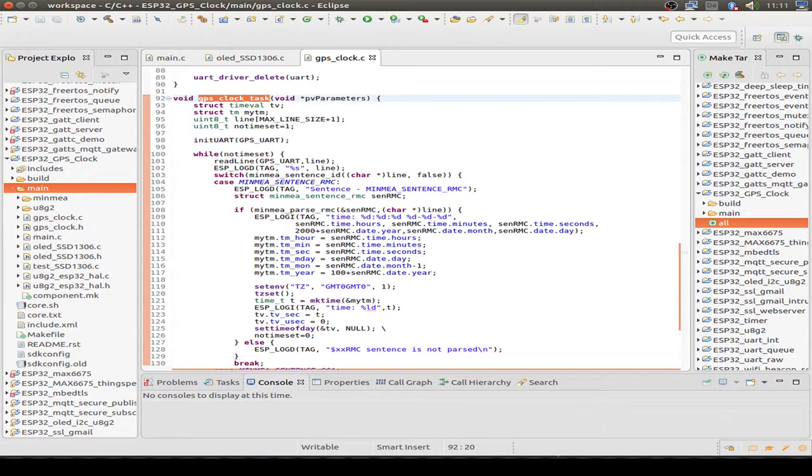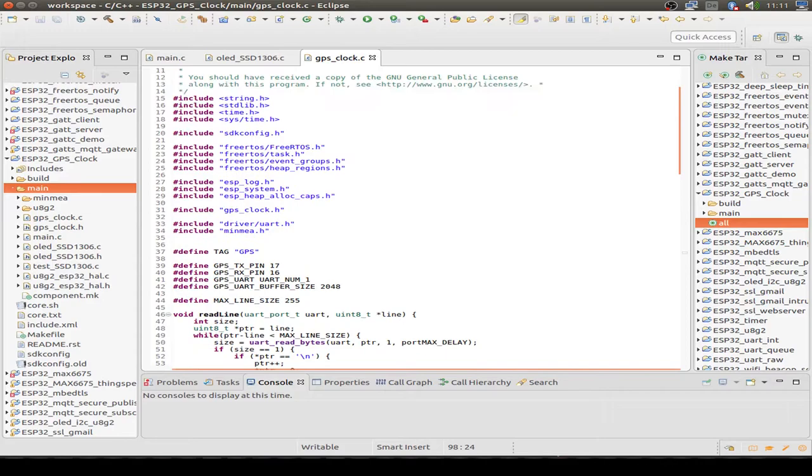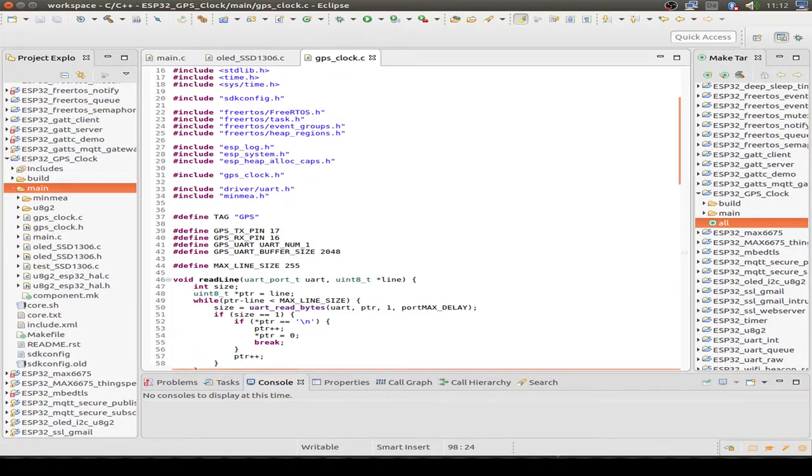The GPS task starts by initializing the second UART driver. As we see, we use UART number one. UART starts at zero, so we use the second UART peripheral. We also set the pins for the UART. I use pin 17 for the transmit pin and 16 for the receive pin.